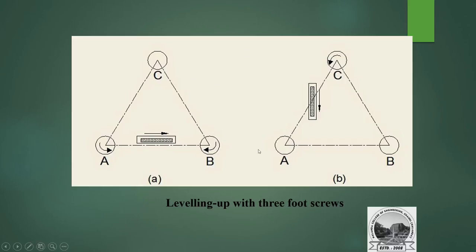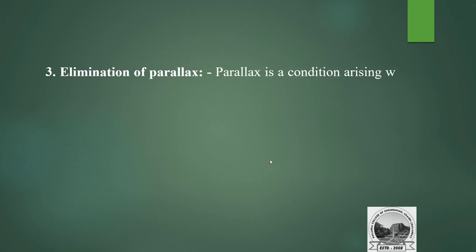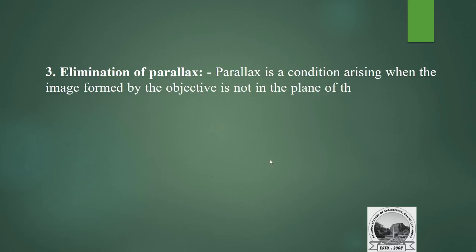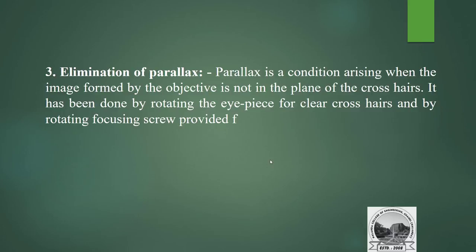Elimination of parallax: parallax arises when the image formed by the objective is not in the plane of the cross-hair. It is eliminated by rotating the eyepiece for a clear cross-hair view and by rotating the focusing screw provided for the objective focus.